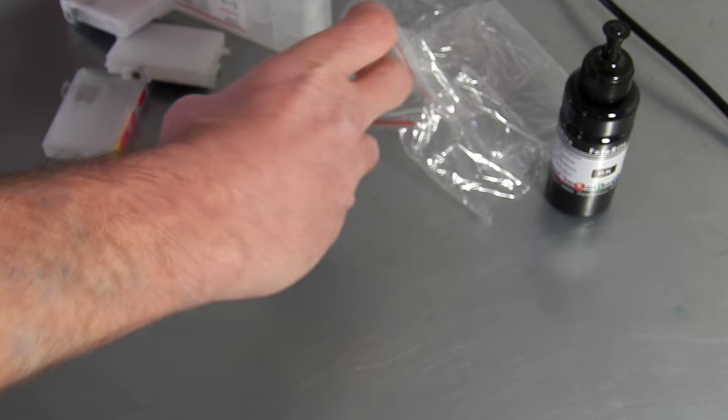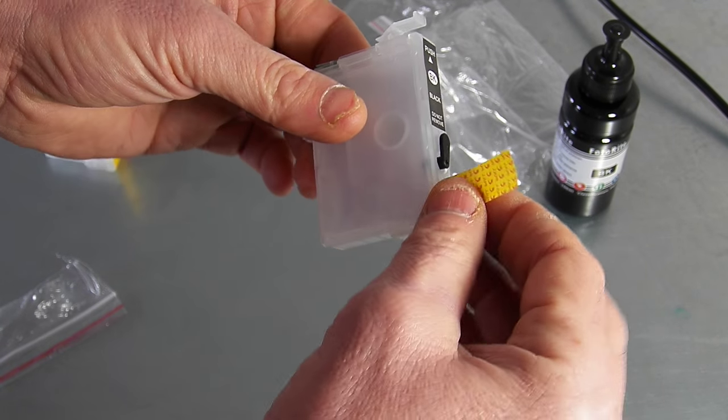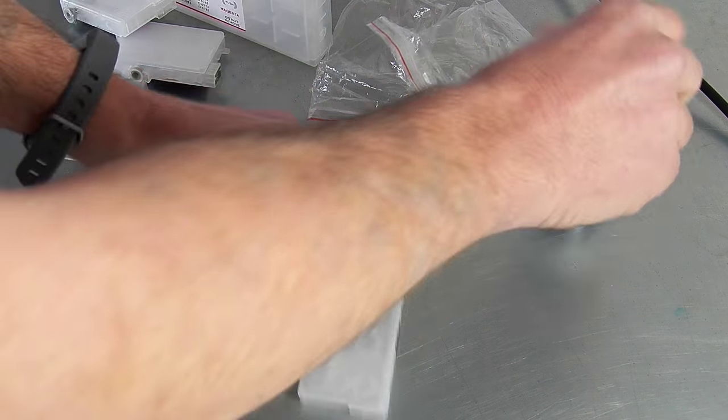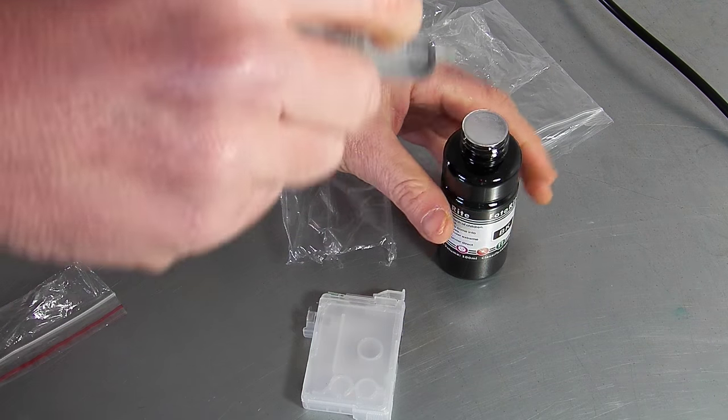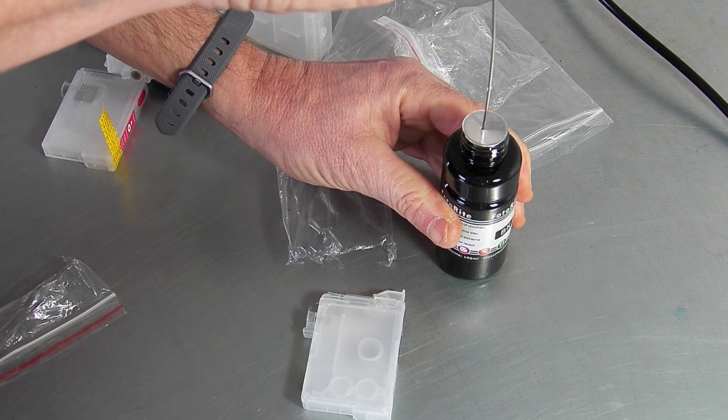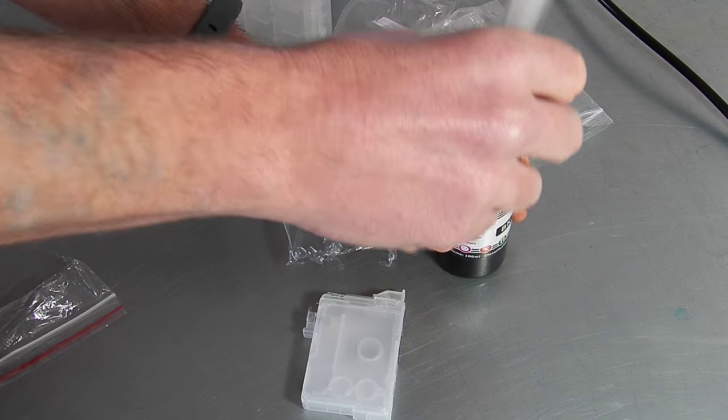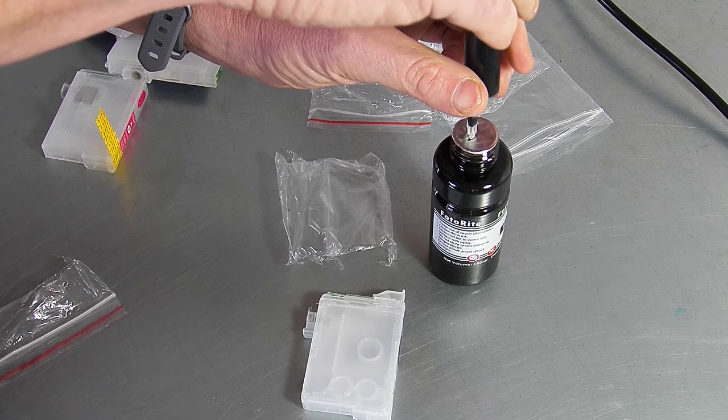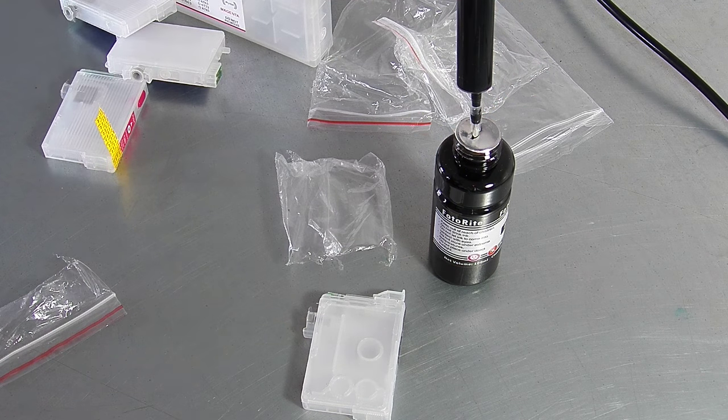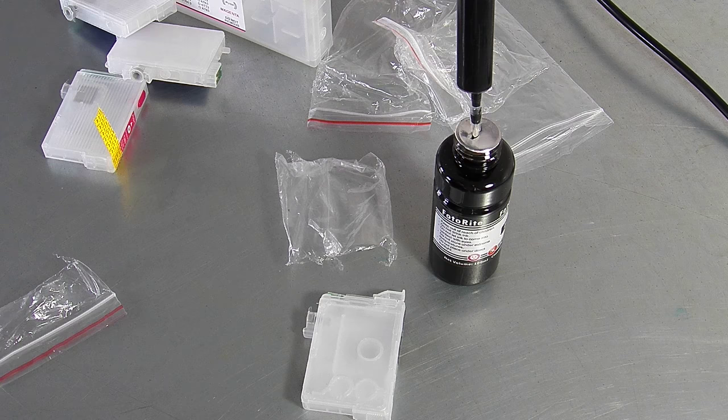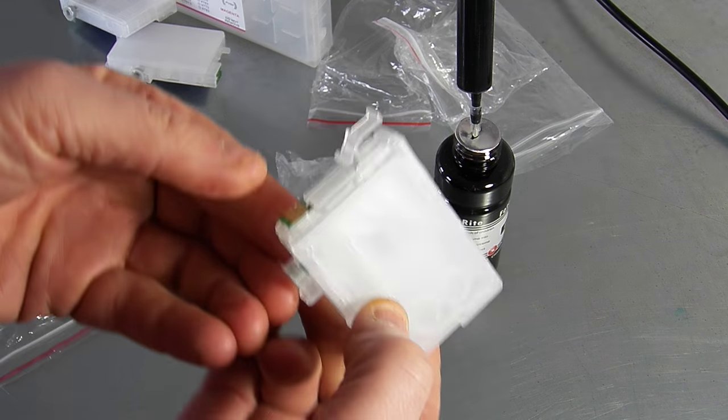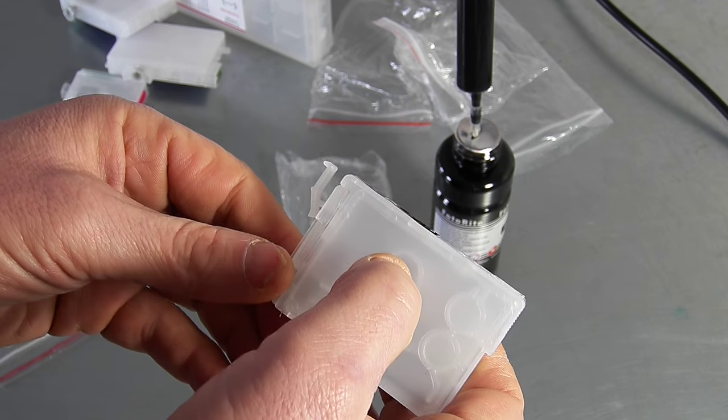So to refill the cartridge, it's really quite straightforward to do. Just remove the clear tape, the yellow tape, and taking your ink. We're going to draw in around 10 ml of ink. Now with these cartridges, it's quite important that you fill them fully to remain in sync. So what you shouldn't do is you shouldn't partially fill the cartridge. The chip is pre-programmed for a full cartridge.